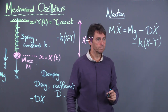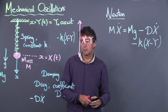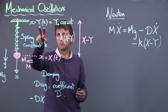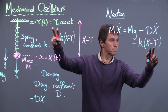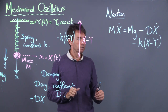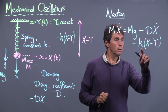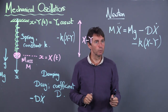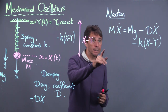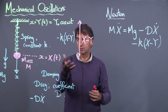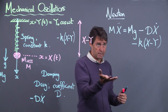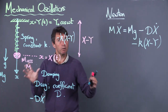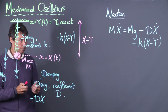Newton's law then says mass times acceleration equals the sum of forces: mẌ = mg − dẋ − k(X − Y). That's the second-order ODE telling us where the mass is. To complete the solution of this initial value problem, I would need to specify where the mass is and what its speed is at t = 0.